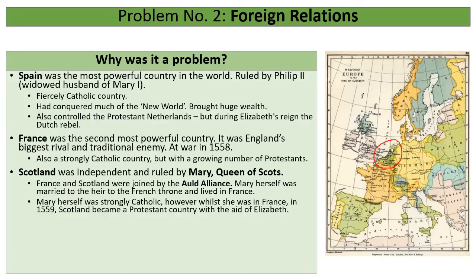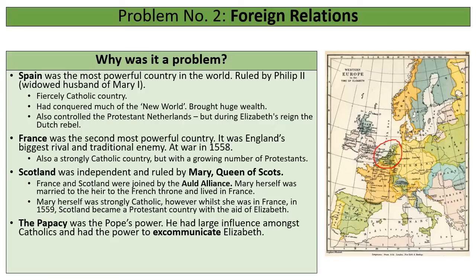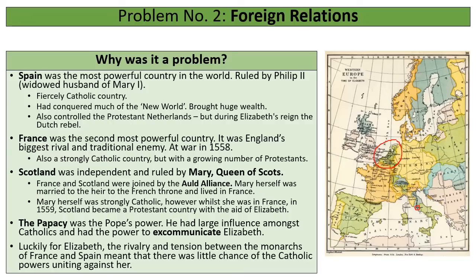Luckily for Elizabeth, Spain and France do not get on — tensions between their royal houses prevent them from forming a formal alliance against England. The last power in Europe is the Papacy — the Pope, based in Rome. The Pope was head of the Catholic Church and had great influence amongst Catholics, including the kings of Spain and France and Mary Queen of Scots. His ultimate sanction was excommunication — banishing someone from the Catholic Church and authorising their deposition. Tensions between the Catholic powers meant there seemed little chance of them uniting against Elizabeth, but she should still be concerned about these threats.